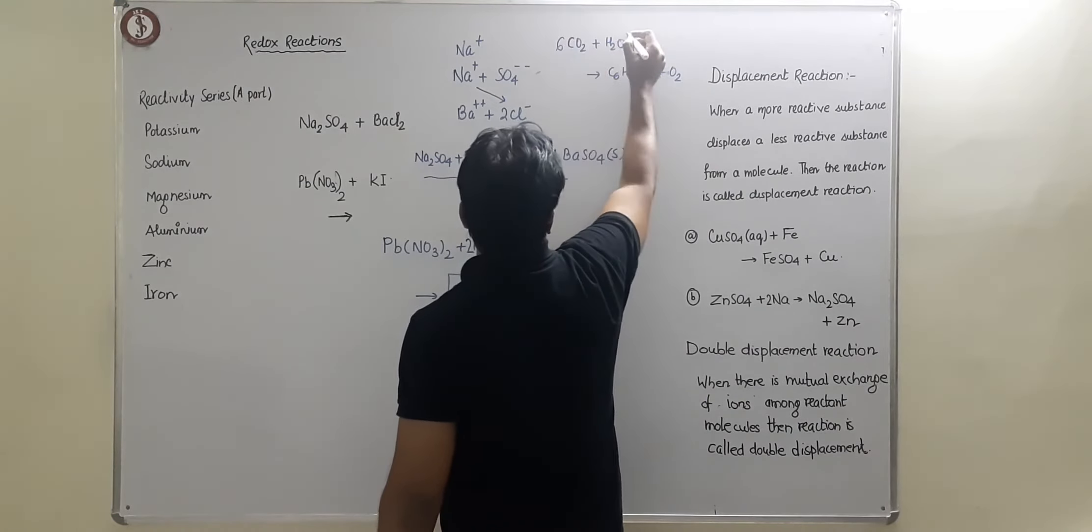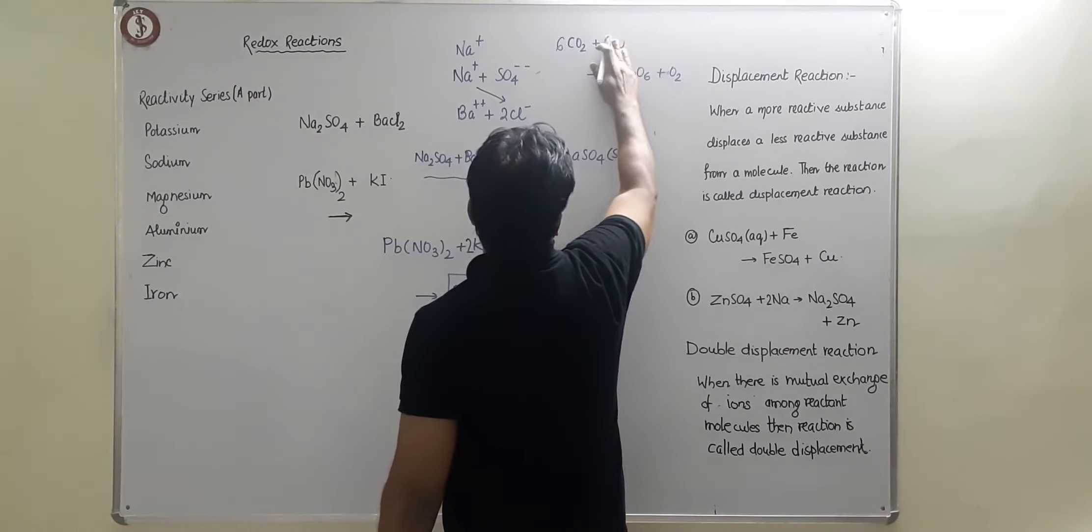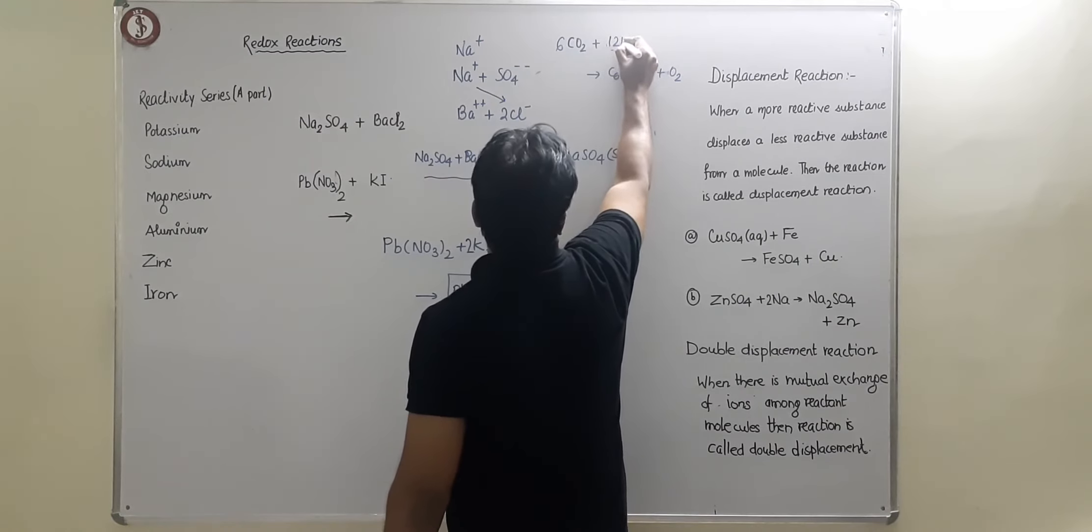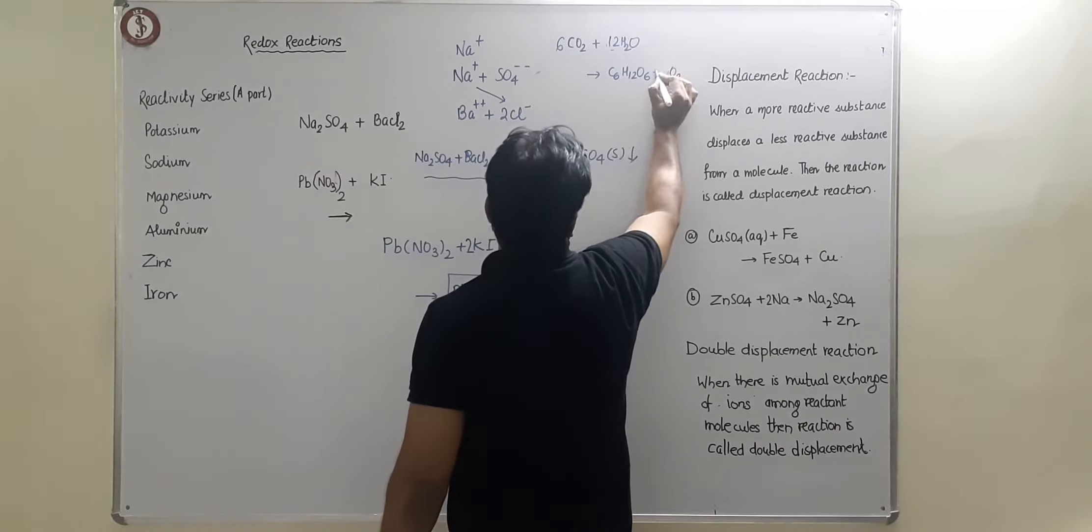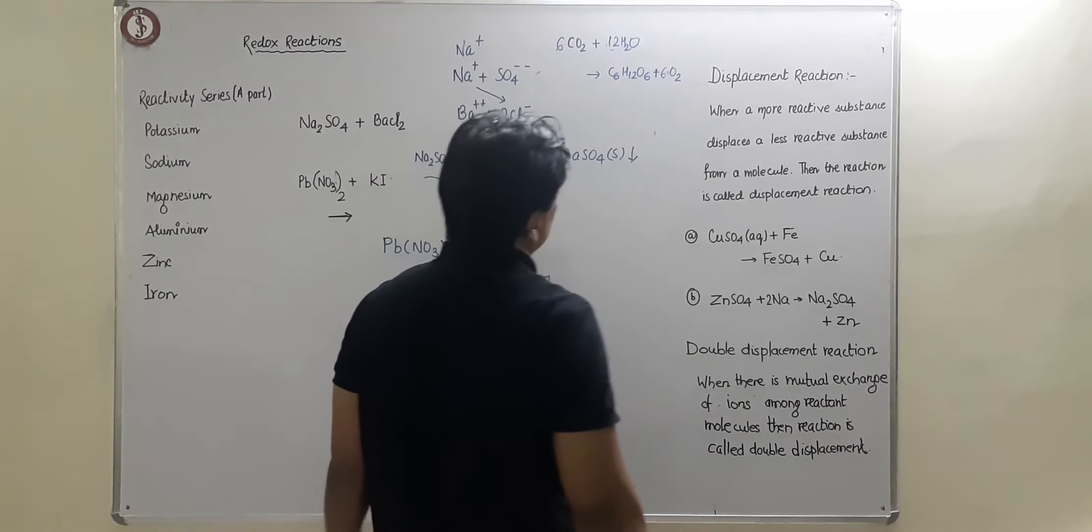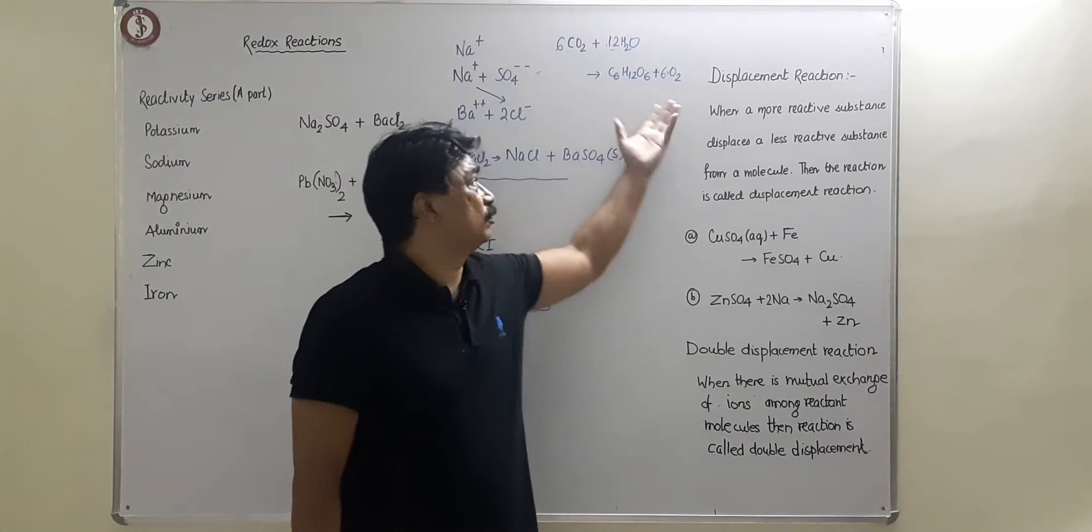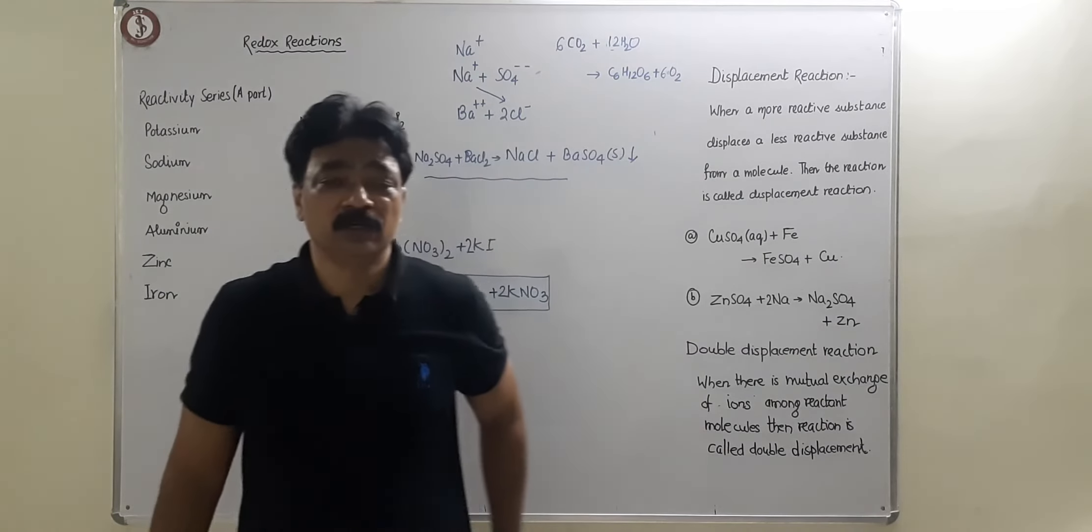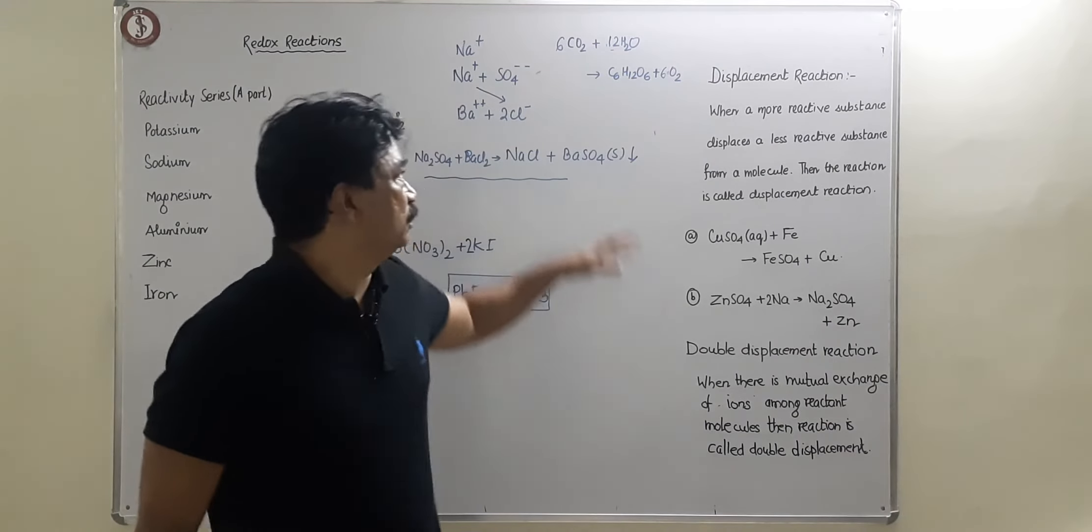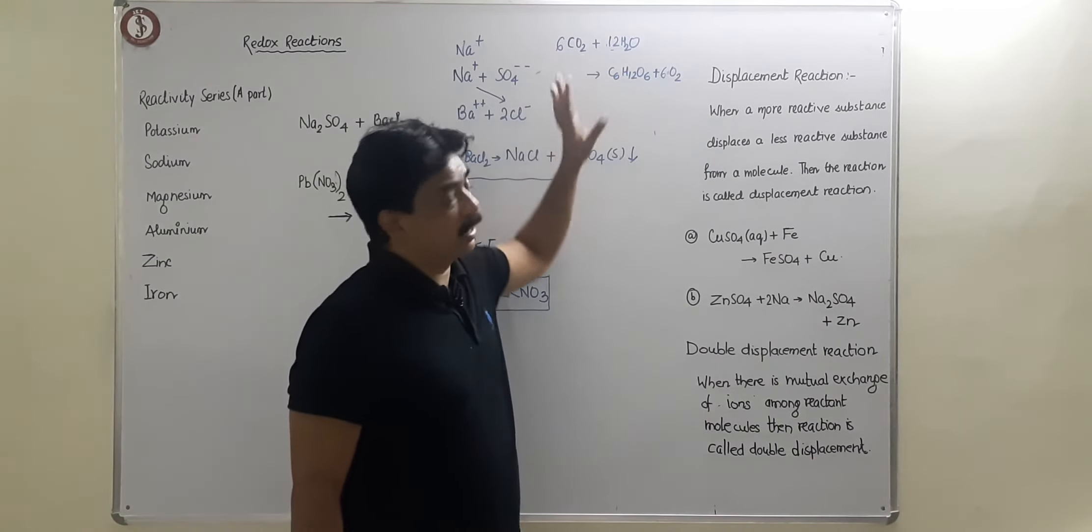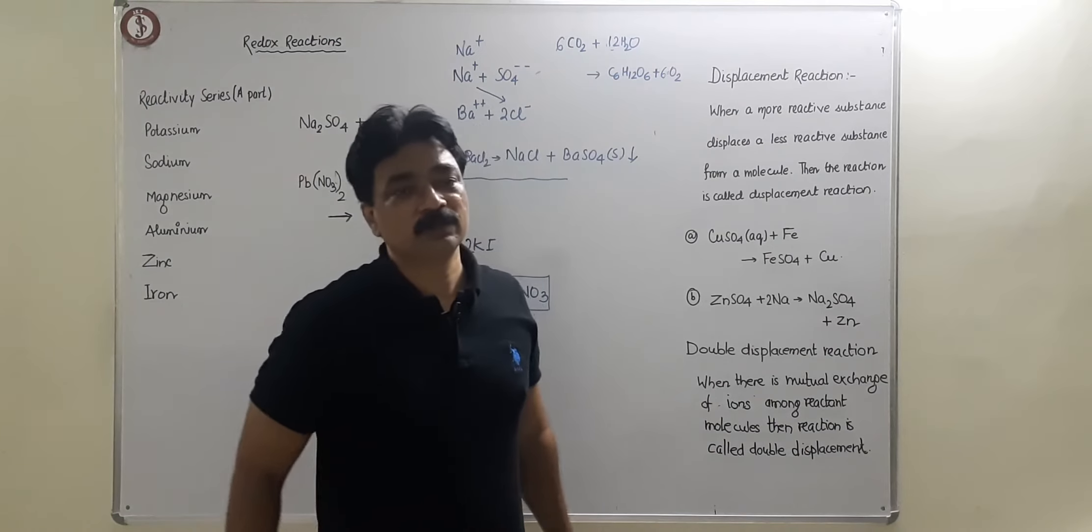Have a look. So we can balance this. Here we can write 12H2O and we can write 6O2. So this is balanced. Now photosynthesis means preparation of food in form of glucose or starch. So photosynthesis is a photochemical reaction. We need here sunlight. Those types of reactions are there.